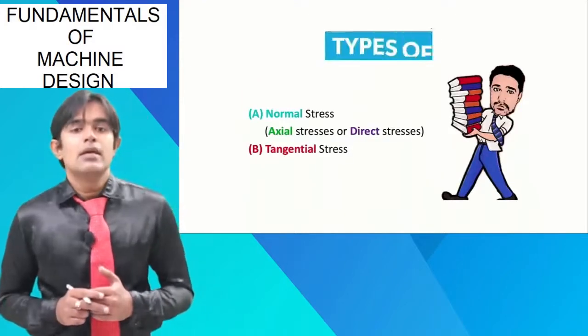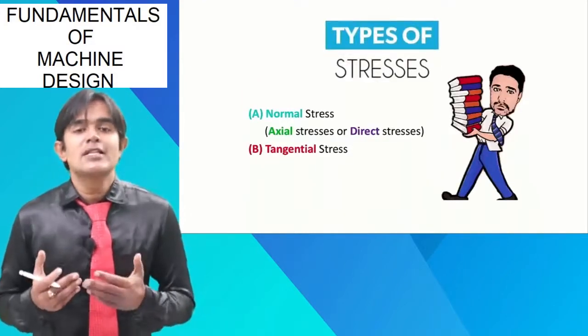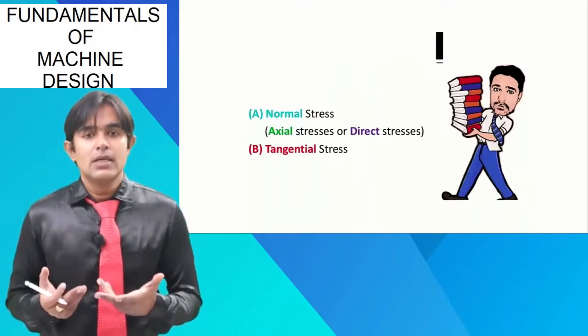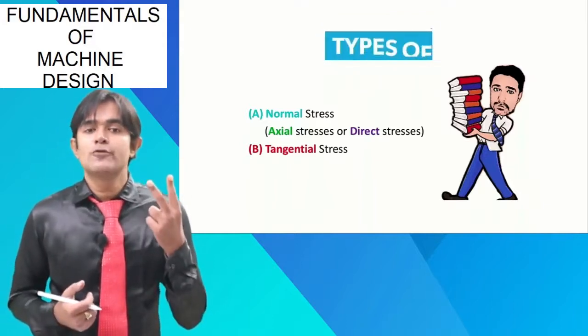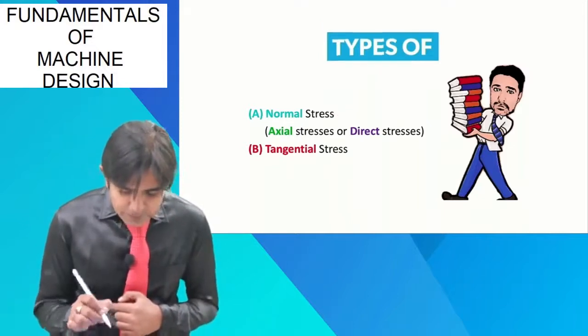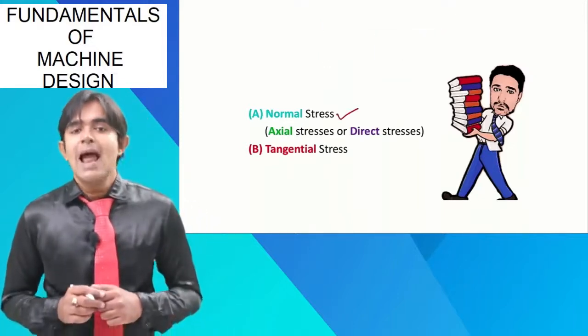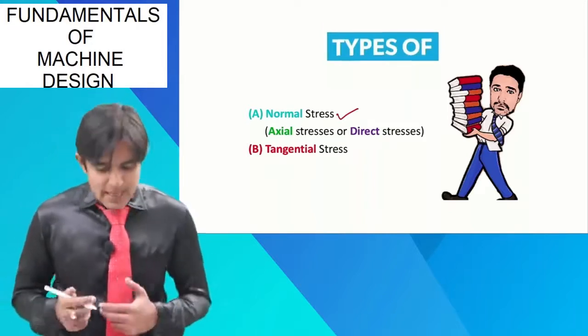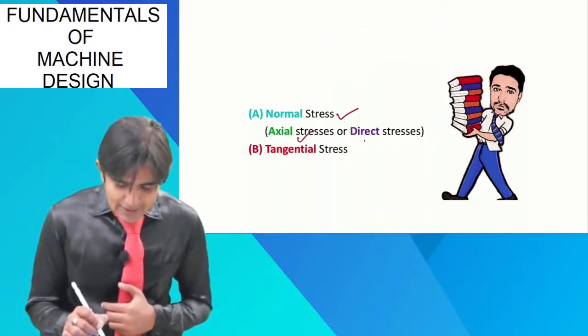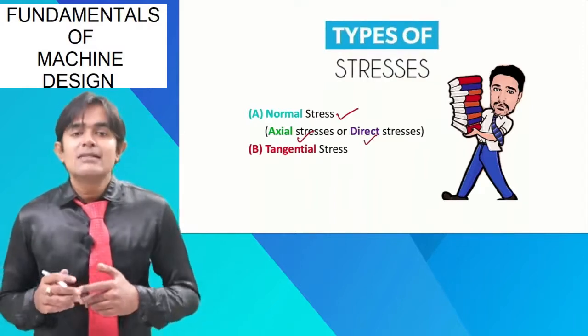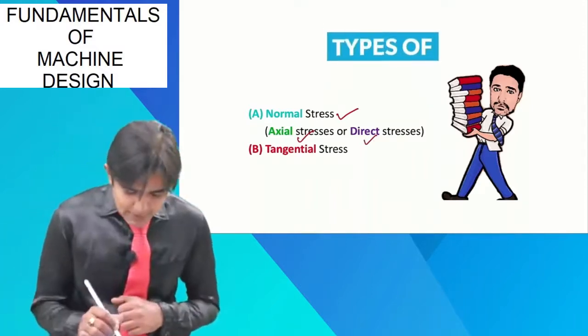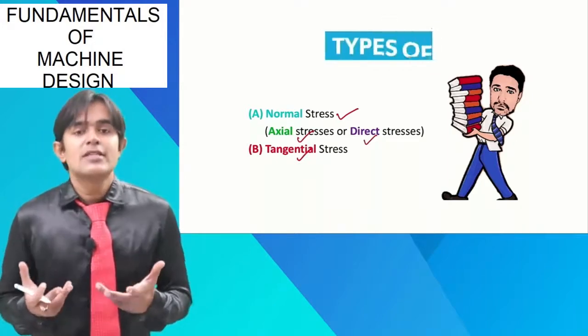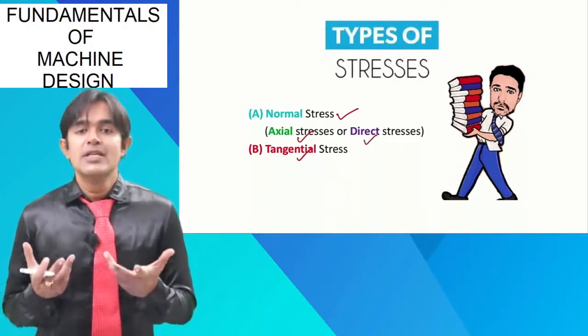Another classification of stress can be done in this manner. There are basically two types of stresses. The first one is normal stress, and normal stress has been given certain other names also, which is axial stress and direct stress. And the second type of stress is called tangential stress. Tangential stress can also be named as shear stress.